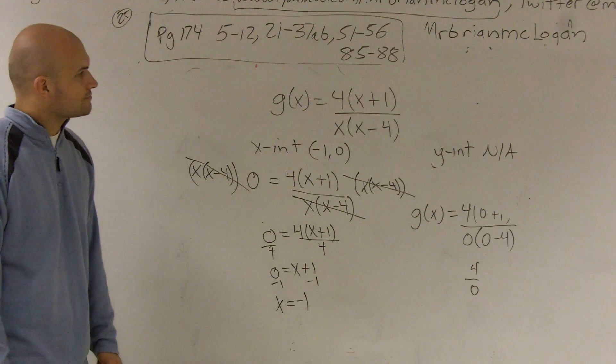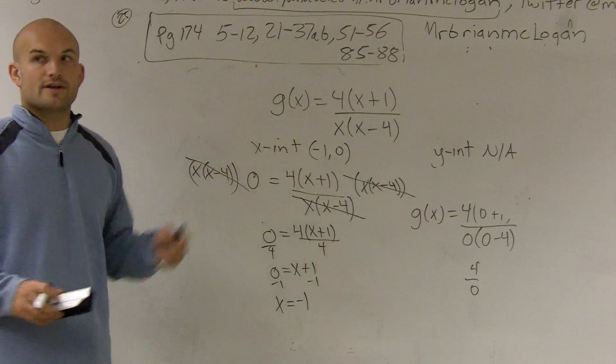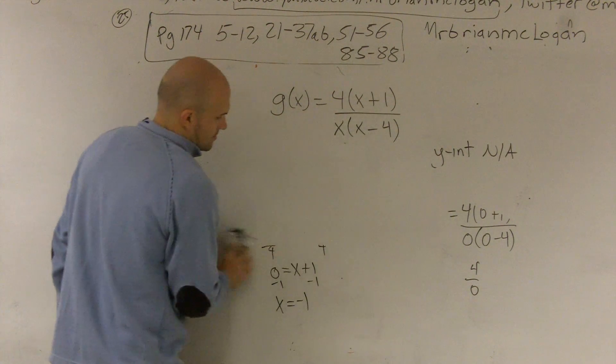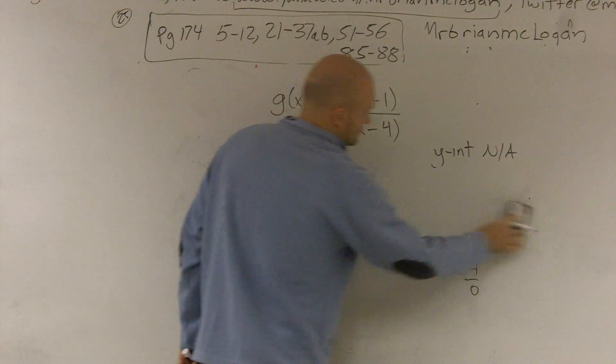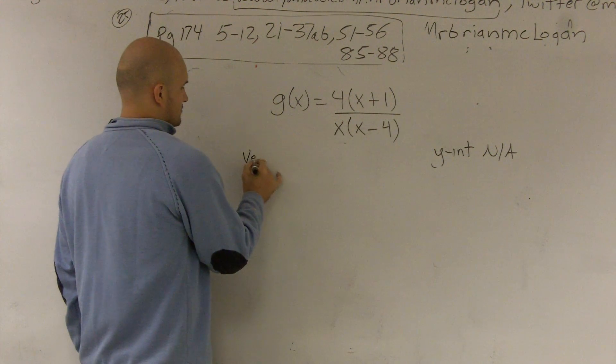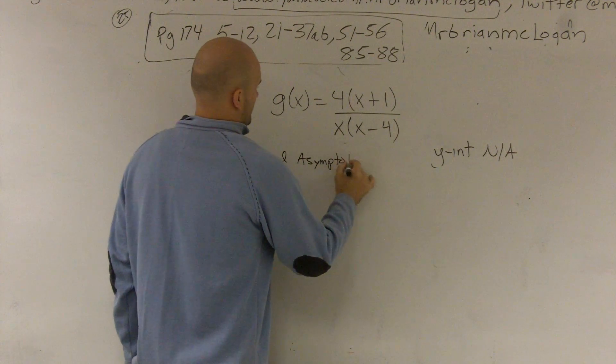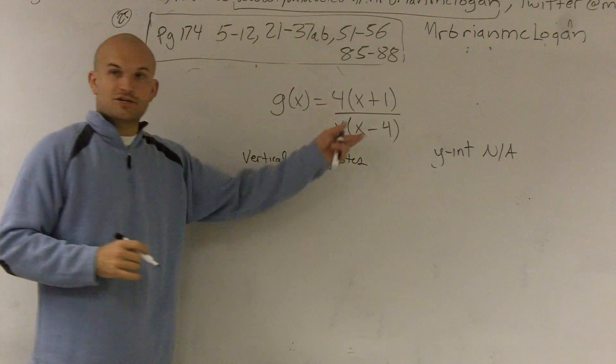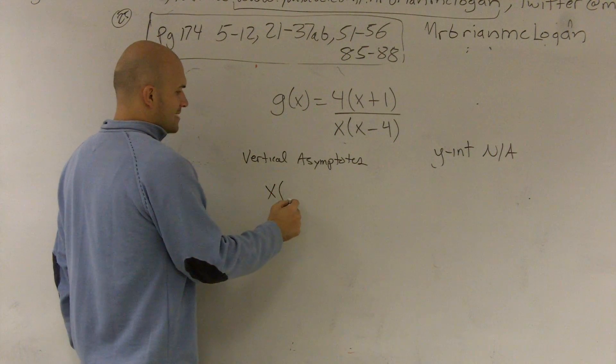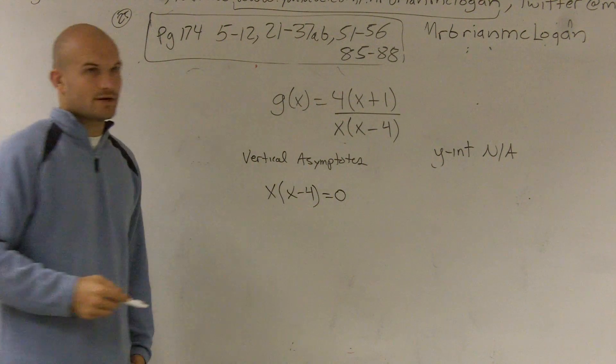All right, then for the next thing we need to do is we need to figure out what the vertical and horizontal asymptotes are. So to find the vertical, what we need to do is we need to set the bottom equal to 0. So you can say x times x minus 4 is equal to 0.